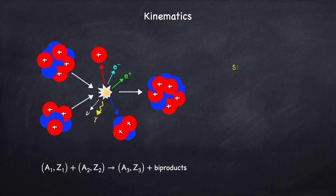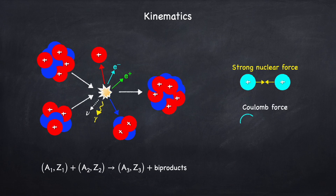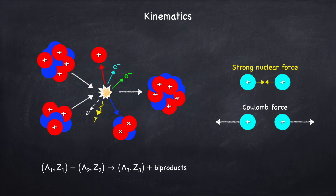What causes these nuclei to fuse is the strong nuclear force. If you have two nuclei close enough together, the strong nuclear force will cause them to attract one another. This force competes with the Coulomb force, or the electrostatic force, because they're both positively charged and like charges repel. The strong nuclear force is stronger than the Coulomb force at close range. However, the strong nuclear force is a short-range force, and so at long range the Coulomb force wins. So in order to get fusion to take place, it's going to take some energy to push these nuclei together to get close enough for the strong nuclear force to finally bind them together.